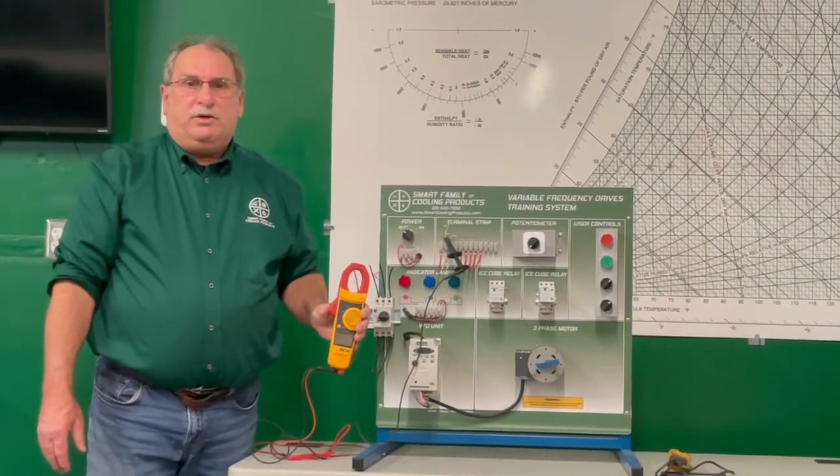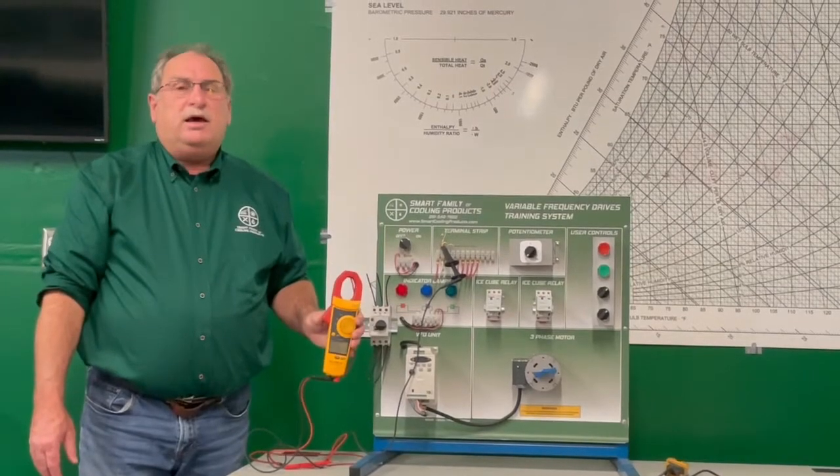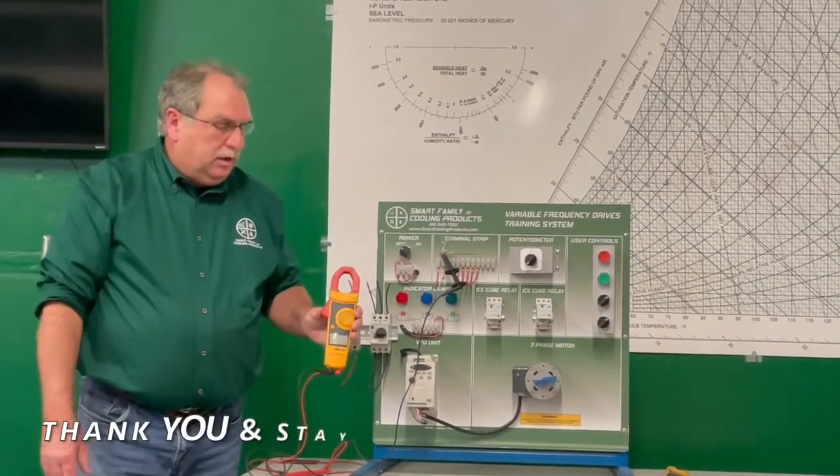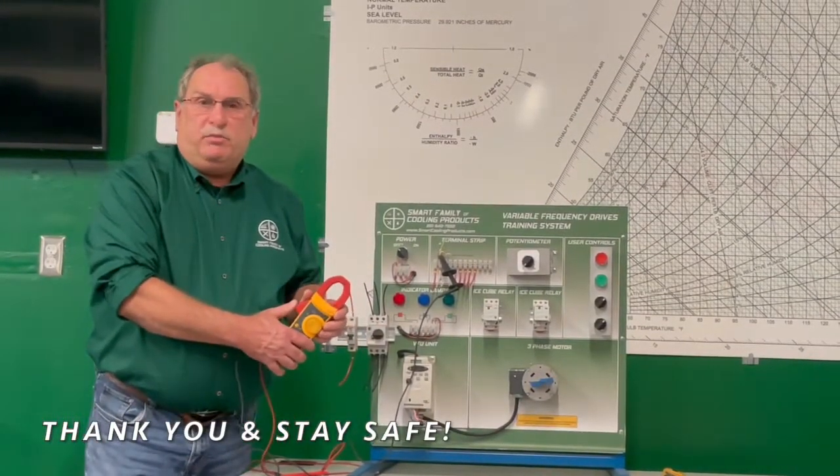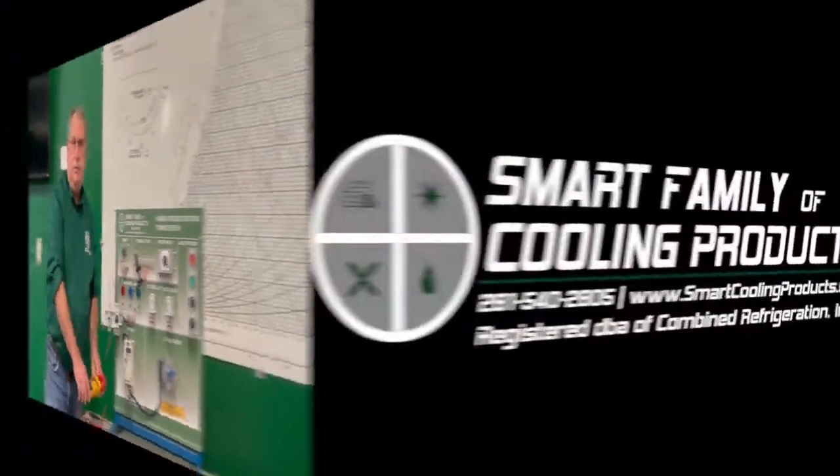So these are some of the things that you should be looking for and there's a lot of good places to get good meters. You can go into Amazon, you can go to Grainger. A lot of people sell good meters, but don't skip on your meter because it will save your life. Thank you.